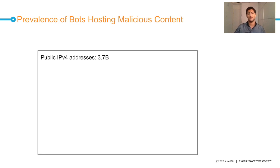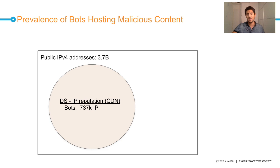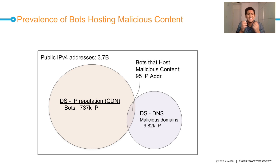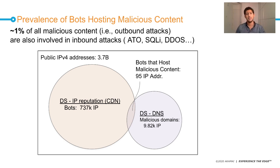To summarize: we have the world of IPv4 with 3.7 billion IP addresses. On one hand, the IP reputation dataset with more than 700,000 IPs involved in attacks. The second dataset is composed of DNS traffic, from which we extracted only malicious domains — 10K domains, each with a unique IP. When we cross-reference these datasets, we find only 95 IP addresses in common. This looks small, but it represents 1% — meaning 1% of all malicious content (phishing websites, malware hosting, etc.) is also involved in inbound attacks.